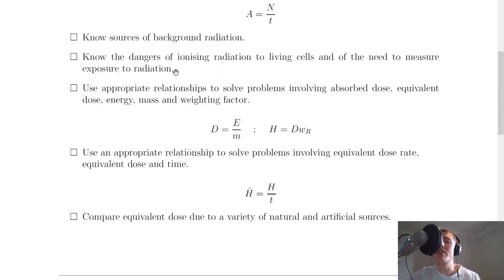Next we have to know the dangers of ionizing radiation to living cells and of the need to measure exposure to radiation. If you're working with radiation on a daily basis it's a good idea to monitor how much radiation you're being exposed to using a film badge and so on. The dangers of ionizing radiation to living cells - the energy deposited from radiation within cells can cause the cells themselves to become denatured and abnormal and then start growing into cancerous tumors.